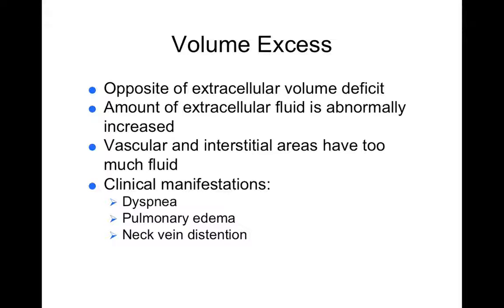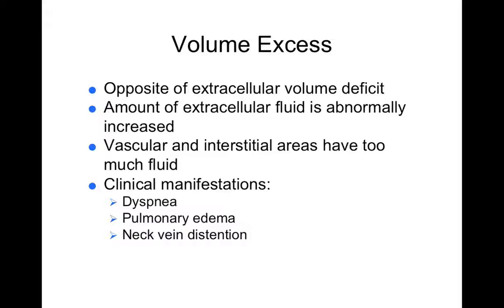Not just the neck veins — really any vein in the body — but the neck veins are more visible and easy to see. Neck vein distension also occurs with heart failure. Right-sided heart failure causes neck vein distension because the right side of the heart can't pump blood along, so venous blood starts backing up in the systemic veins, including neck veins — jugular vein distension.